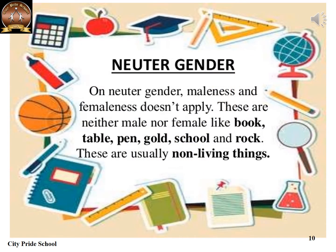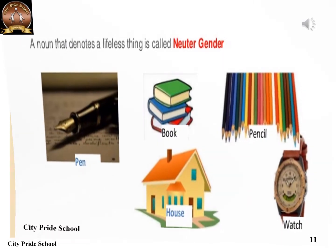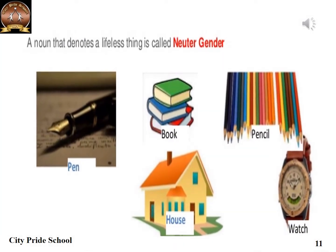Neuter gender: when nouns do not tell us whether they are male or female, they are said to be neuter gender. Neuter genders are always non-living things. Examples: book, table, pen, gold, school, rock. More examples: pen, book, watch, pencil, house, cupboard, bed, table, chair. All nouns that are lifeless are called neuter genders.